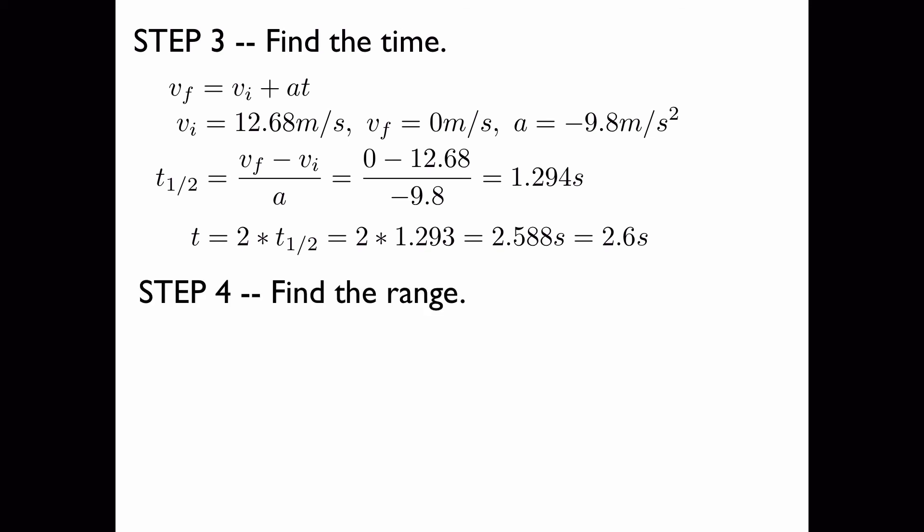Now we want to find the range. This is quite easy now that we know the amount of time that the projectile spends in flight. We simply multiply that time by the horizontal velocity. Now remember that the horizontal velocity is independent of the vertical velocity, so it's constant throughout time because there are no forces in the x direction. We multiply the horizontal component of the velocity by the airtime, and when we take account to the significant figures in the problem, we get a range of 70 meters.